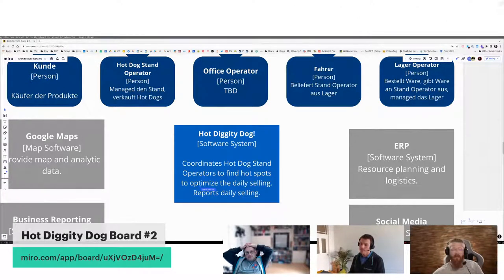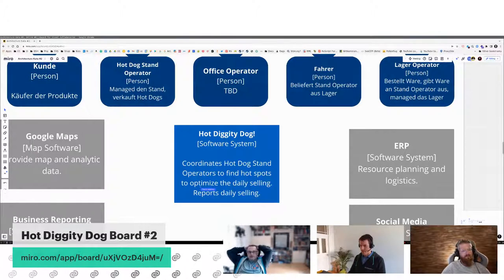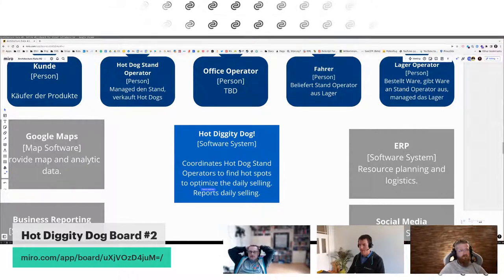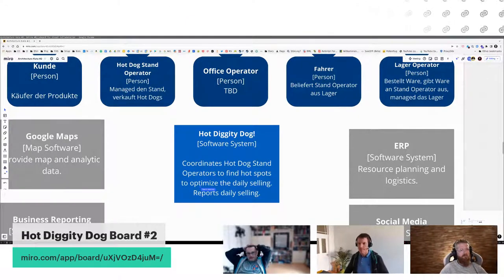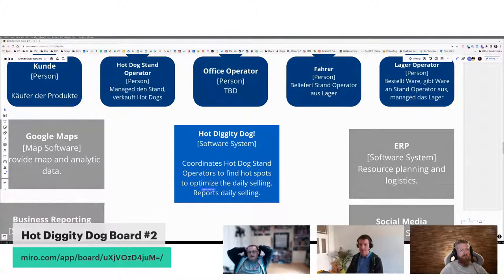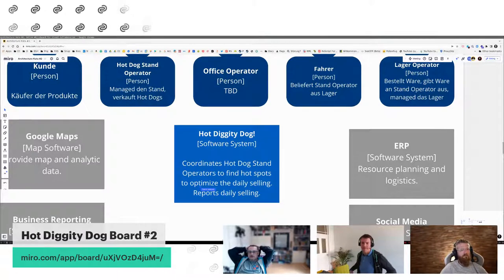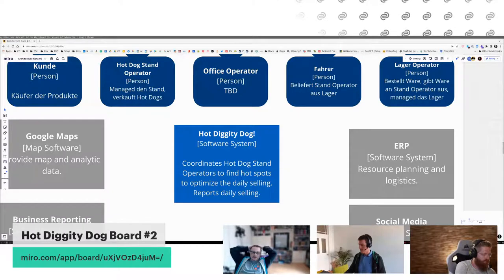Simon Brown, der sich das C4-Modell ausgedacht hat und einen starken UML-Hintergrund hatte, hat das C4-Modell komplett neutral gegenüber der Notationsform gestaltet: wer möchte, macht einfach Kästchen und Pfeile, kein spezielles Metamodell nötig. Er hat aber einige Elemente aus UML importiert. Diese Klammern waren die Stereotypes in UML, mit denen man Klassen umfunktionieren kann, damit sie eine andere Bedeutung haben – und die werden in C4 in einer sehr ähnlichen Variante genutzt.